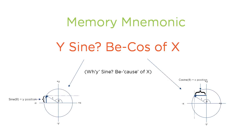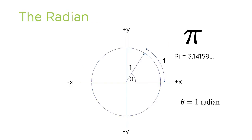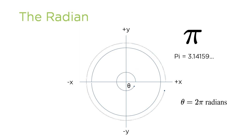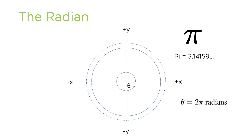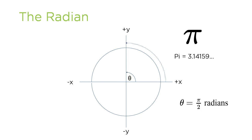A memory mnemonic to remember this: ask yourself 'why sine because of X?' It's also worth noting that the angle input is measured in radians, with a range of 0 to 2π. A radian is the angle formed when we wrap the radius of the circle around its edge — the angle between the two ends of that arc is 1 radian. There are 2π radians in a complete circle, equivalent to 360 degrees. So half a circle is π radians, and a quarter circle is π/2 radians.